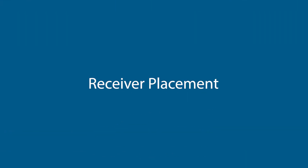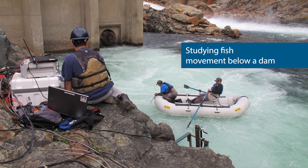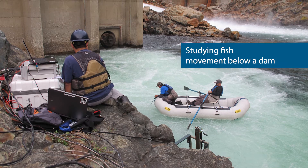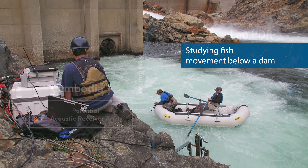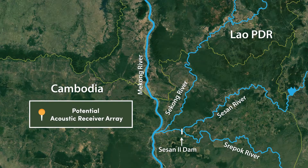Now let's talk about where you would place individual receivers in the river. Generally, you would start by choosing important junctions you want to monitor. For example, if we want to track fish movements coming into the 3S Basin, we're going to put more than one receiver in a given location. When placing an individual receiver, placement is mostly driven by the bathymetry of the river bottom — that is, the shape of the river bottom — because that affects how sound transmits underwater.